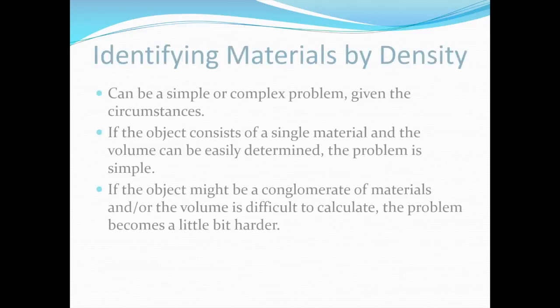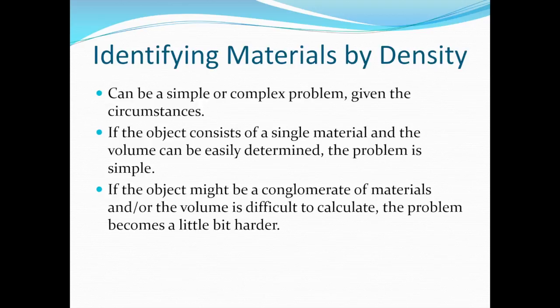So far, we've discussed the first three. So let's talk about the fourth point, identifying materials. This can be a simple or complex problem, depending on the situation. If we have an object that's only made up of one material, and it has a volume that's easy to determine, like a cube or sphere, then the problem is very simple. But if we have a mixture of materials, or a shape that we can't calculate a volume for, then the problem becomes more difficult.